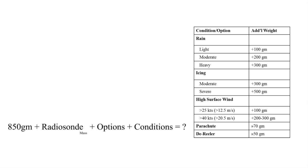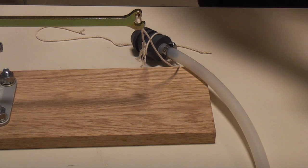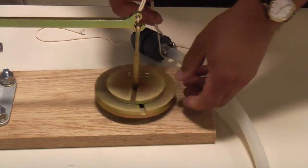However, if I intend to launch in light rain, I would add an extra 100 grams of weight. This would bring my weight required up from 1,200 grams to 1,300 grams. Then, we put the weights on the end of the weight lever arm.